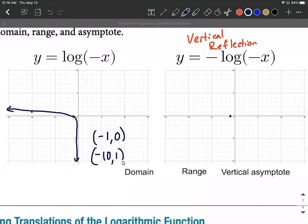So that's still (-1, 0), but the other key point that we're kind of tracking around, (-10, 1) is going to go to (-10, -1).